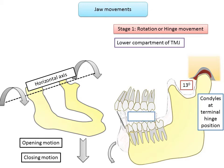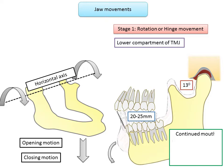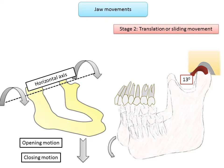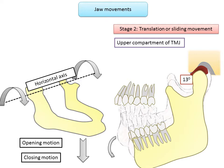At this stage the condyles are termed to be at the terminal hinge position. If continued mouth opening occurs, it results in an anterior and inferior translation of the condyles — Stage 2 — wherein there is translatory or sliding movement between the temporal bone and articular disc in the upper compartment of the TMJ. This occurs until maximum mouth opening of 40 to 50 millimeters.